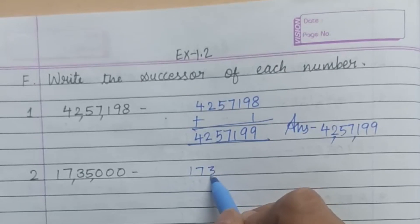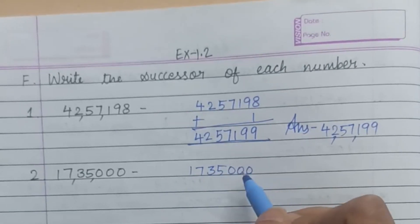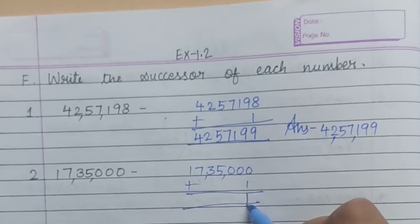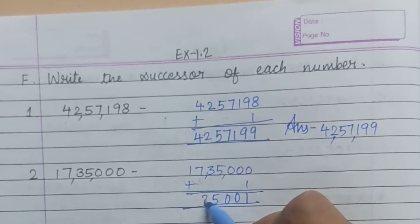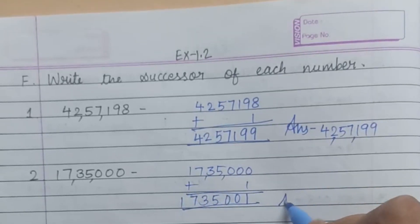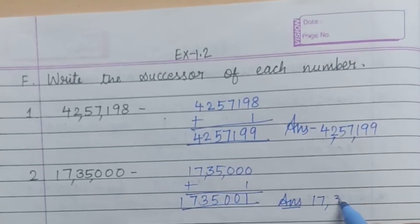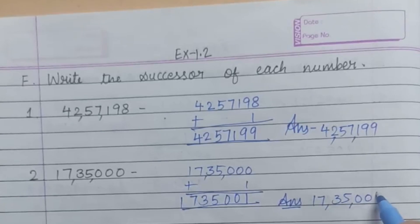Next question: 17,35,000. What is the successor of this number? Add 1. Zero plus 1 is 1. Bring the numbers down. The successor is 17,35,001.